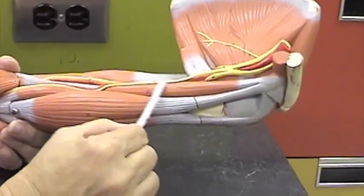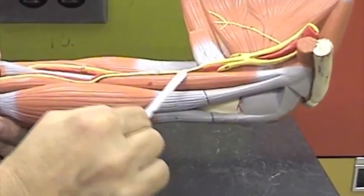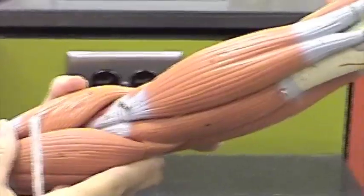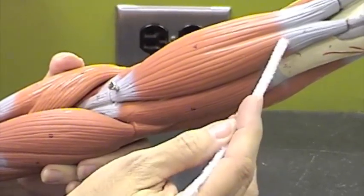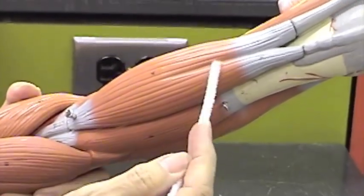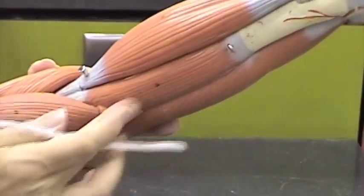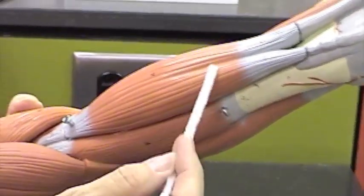Here is coracobrachialis. Next we have biceps brachii, two heads on the muscle, and it is by the brachium, so a reasonable name, biceps brachii.